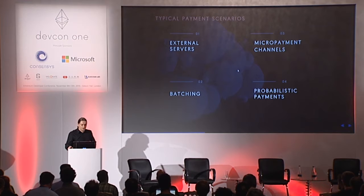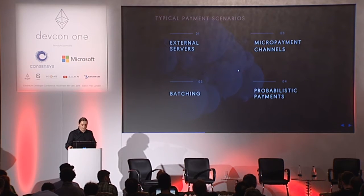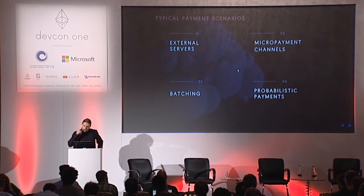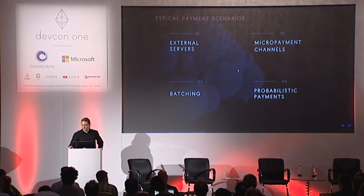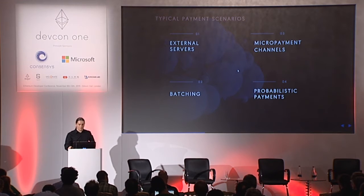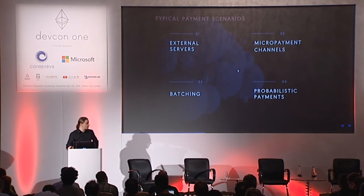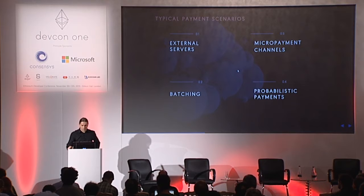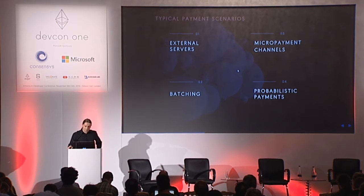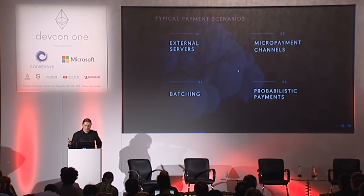Batching boils down to initiating all transactions with one message — in Ethereum it's just a loop that sends value to all users. A very promising option is micropayment channels, but unfortunately this requires a setting where two parties cooperate together for a longer period of time, which is not the case in Golem. The last option — probabilistic payments as described by Vitalik on his blog — seems very promising.